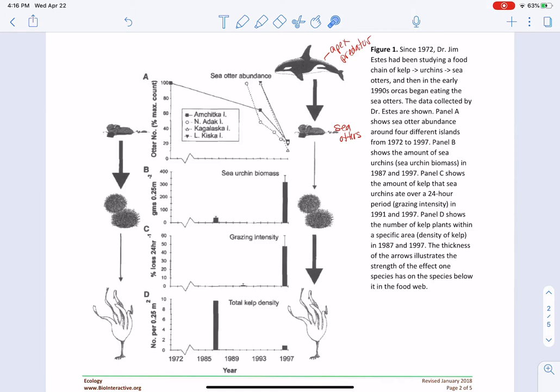If the apex predator or the orca is removed, as in this column, we have no apex predator. So the sea otters are free to grow very large, and we see a large population of them.